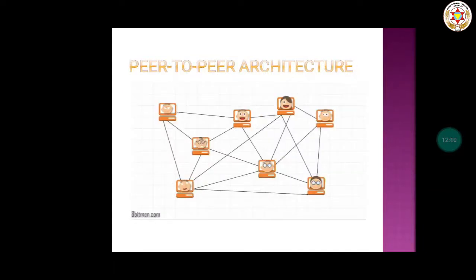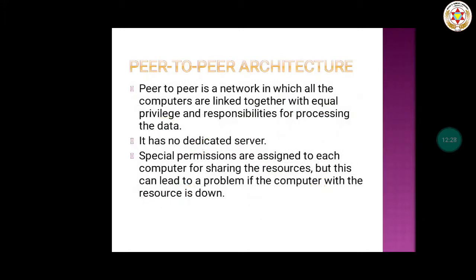Another type of architecture is peer-to-peer. In the diagram we can see multiple nodes or devices, and each device is connected to another device with a dedicated link, forming an end-to-end or peer-to-peer connection. Peer-to-peer is a network in which all computers are linked together with equal privilege and responsibilities for processing data. Each device or node is assigned responsibilities and authorities through which it can access data and resources from another computer system.